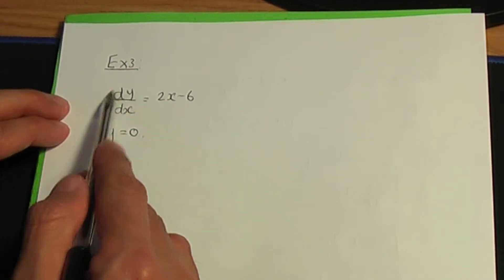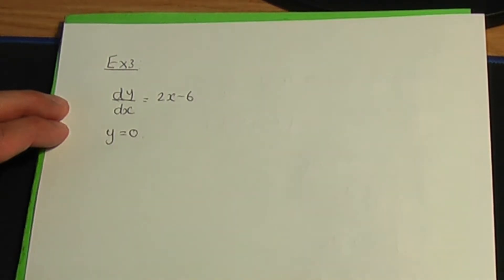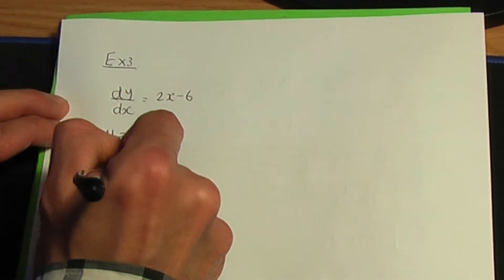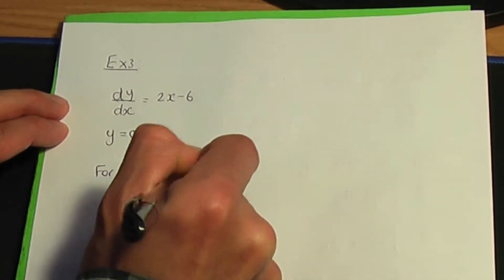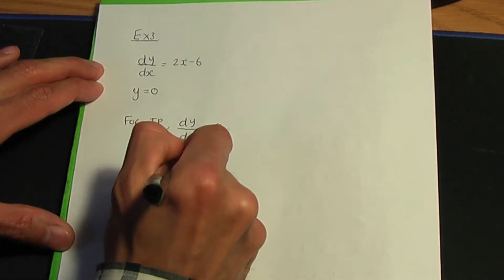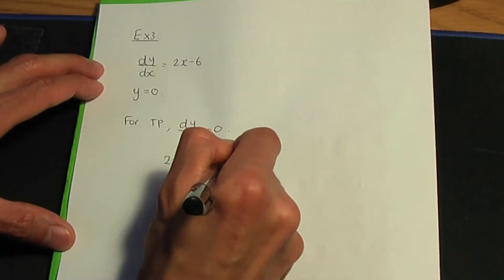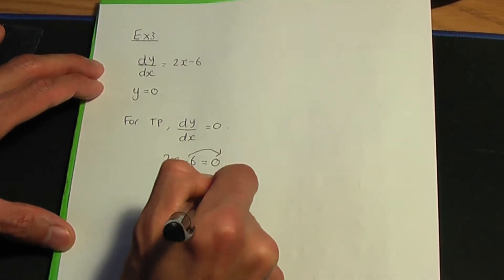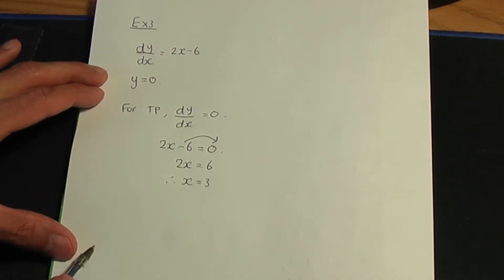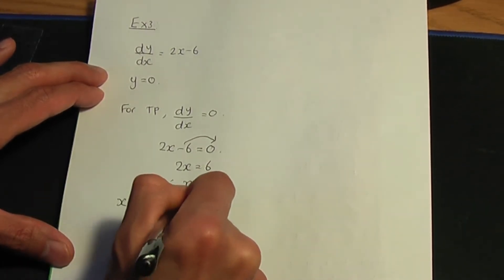dy over dx is given as 2x minus 6 and the y-coordinate of the minimum point is 0. First, we need the x-coordinate. For turning points, dy over dx equals 0. Setting 2x minus 6 equal to 0 and taking minus 6 to the other side: 2x equals 6, so x equals 3. The coordinates of the minimum point are x equals 3, y equals 0.